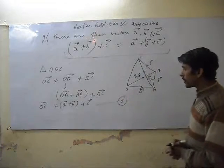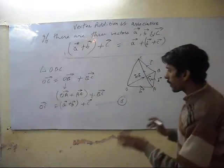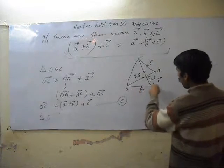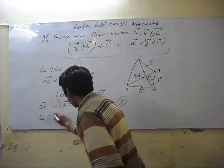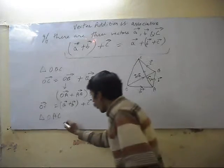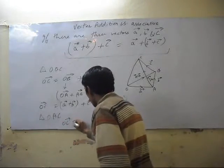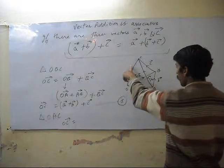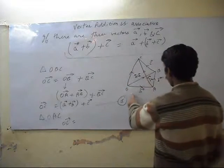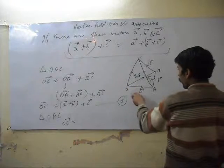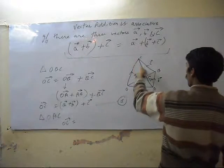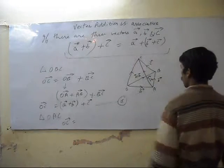Now in the second part we are taking triangle O, A, C. In triangle OAC, OC vector is equal to OA vector plus AC vector.